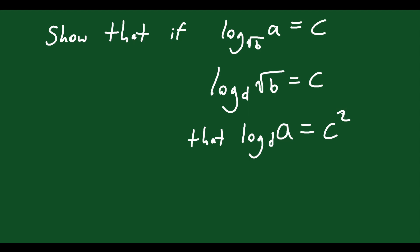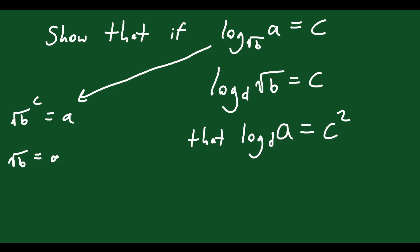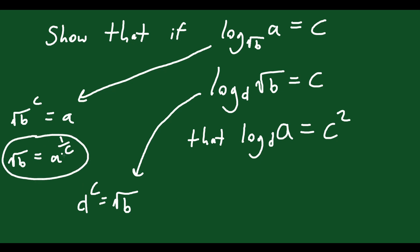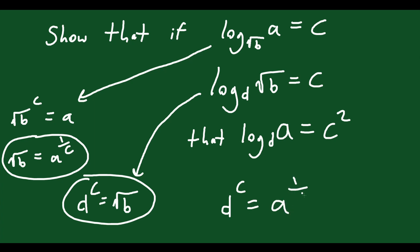I would start by rewriting these as exponents. Start with the first one: √b to the c equals a, which means √b equals a to the exponent 1/c. For the second: d to the c equals √b. Since a^(1/c) equals √b and d^c equals √b, those must equal each other — d^c must equal a^(1/c).